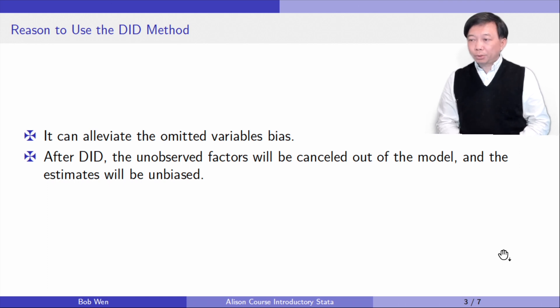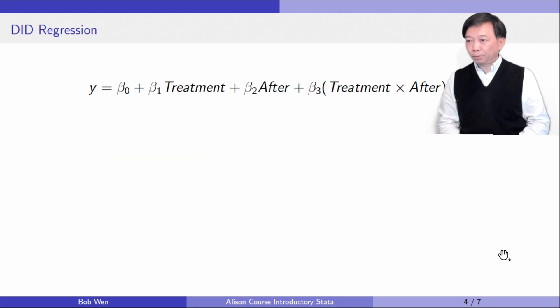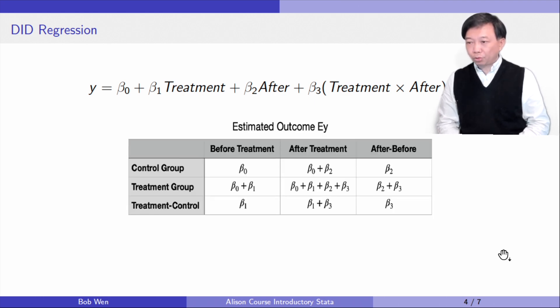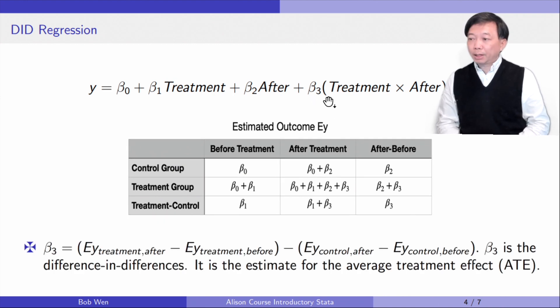Let's see how we can do the difference in differences in the OLS regression model. We include the interaction term between the treatment and the after variables in the model. The coefficient beta 3 on the interaction term measures the average treatment effect. For the control group, the difference between after and before the treatment equals beta 2. For the treatment group, the difference between after and before the treatment equals beta 2 plus beta 3. The difference in differences is beta 3. Beta 3 measures the pure effect of the treatment on the outcome by ruling out other influences experienced by both groups.